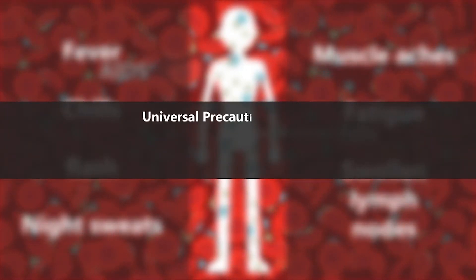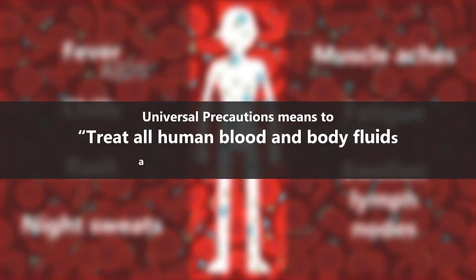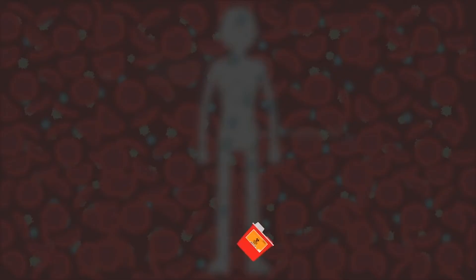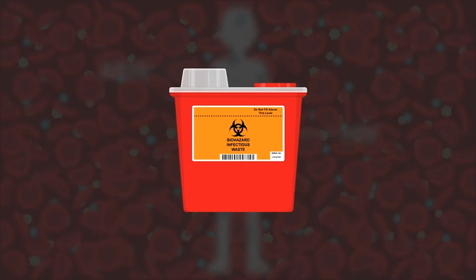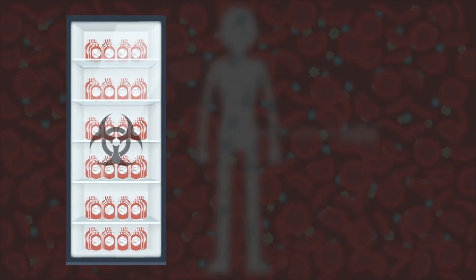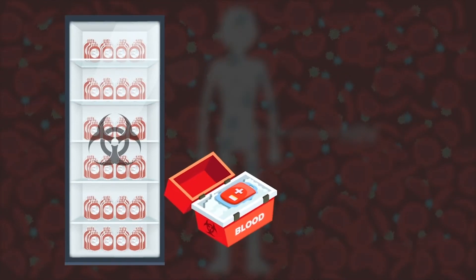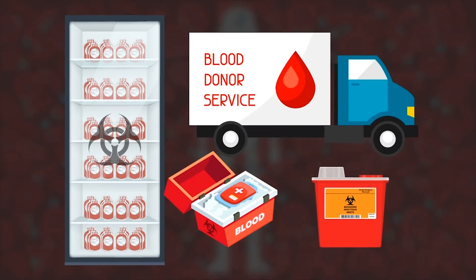Universal precautions means to treat all human blood and bodily fluids as if they are infectious. Biohazard warning labels are required on containers for regulated waste, refrigerators and freezers containing blood and other potentially infectious materials, and other containers used to store, transport, or ship blood or other potentially infectious materials.